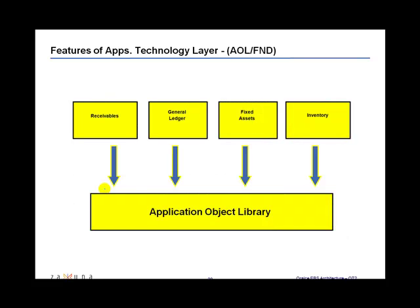The Application Object Library is a large component of the application technology layer. It is a collection of pre-built application components and it facilitates the building of Oracle applications and extensions to Oracle applications. It primarily provides capabilities for developers to extend the operation of Oracle applications by creating custom programs that interact with the base modules.